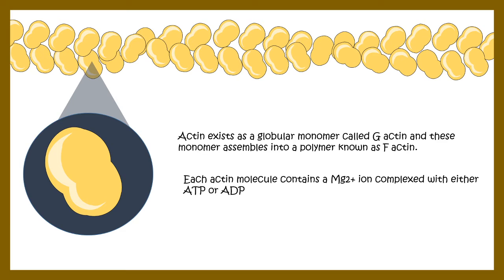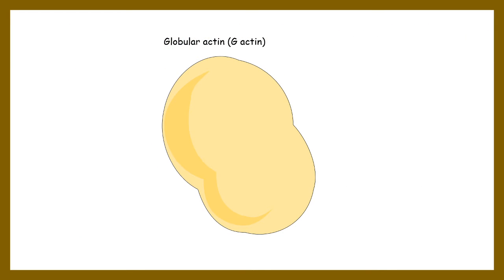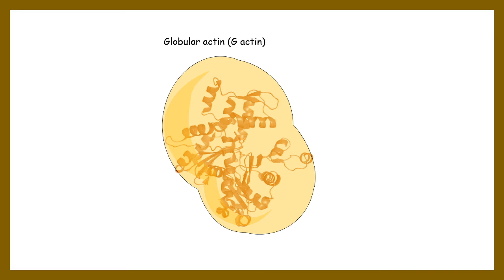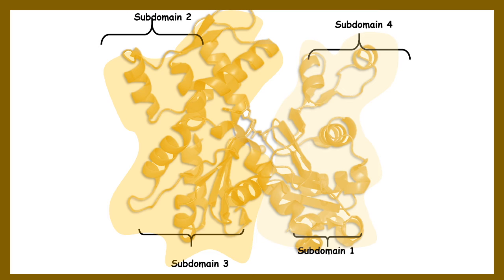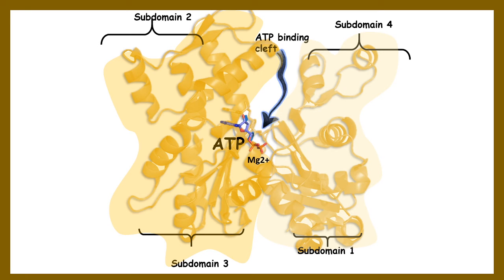Each actin molecule contains an Mg²⁺ ion and an ATP binding cleft, so ATP hydrolysis is important for actin polymerization. Looking at the globular actin structure, there are four subdomains. The ATP binding cleft binds ATP, and in the ATP-bound configuration, actin monomers can be polymerized or added to an existing microfilament. The Mg²⁺ ion also helps in polymerization.